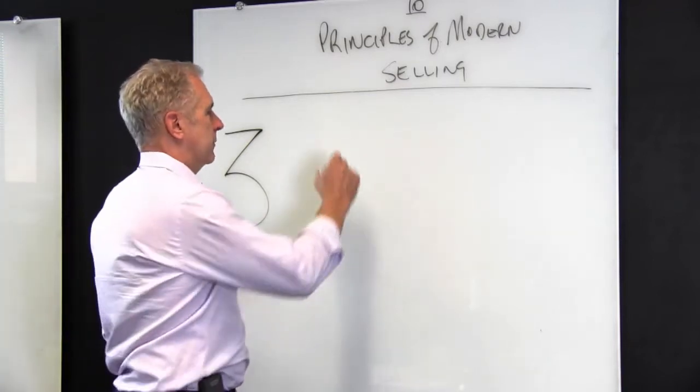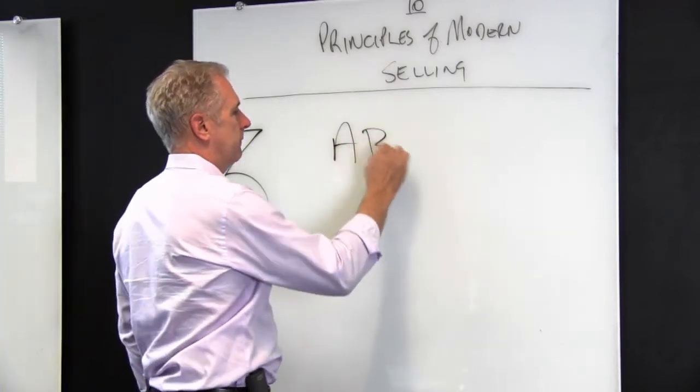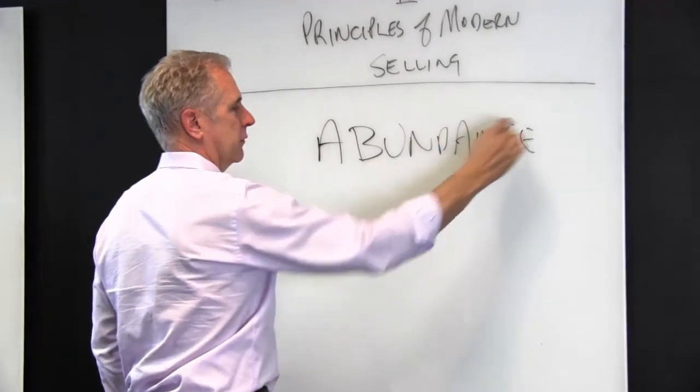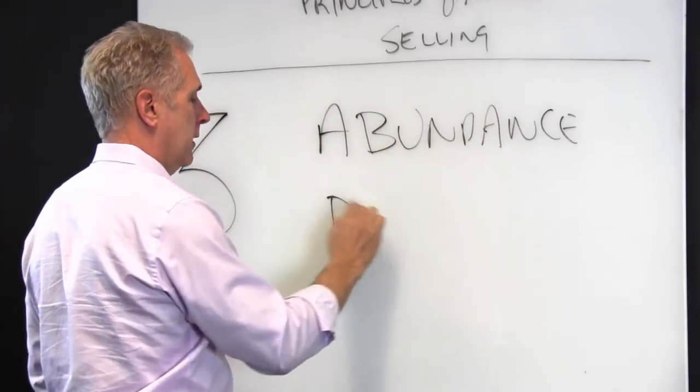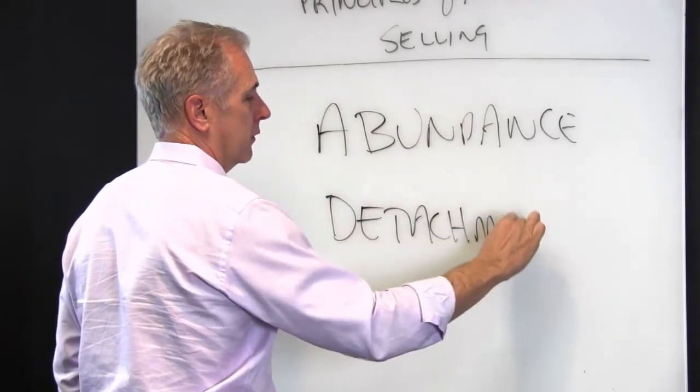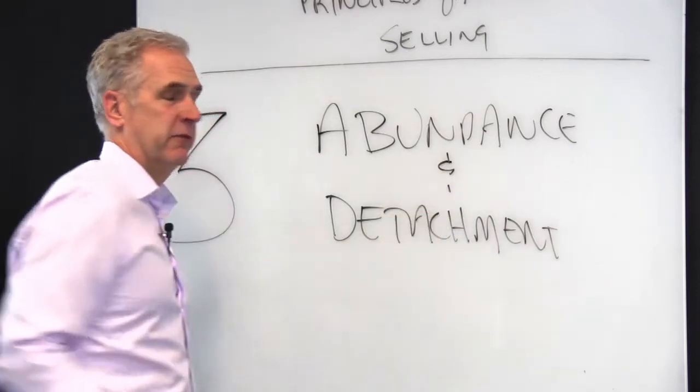Principle number three is the principle of abundance. You've heard us talk about that if you listen to the podcast or read any of the blogs at Kasky One. Or detachment - I shouldn't say or detachment. I should say the principle of abundance and detachment.